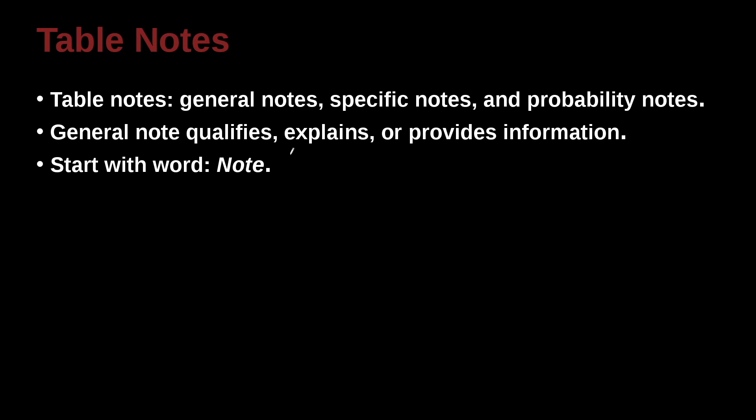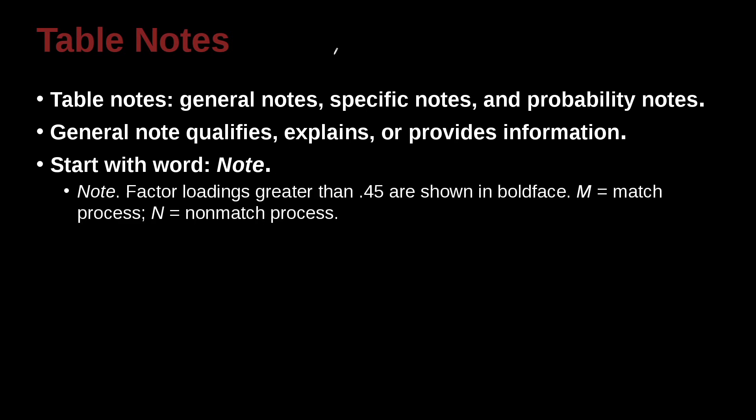So here's an example. You can see 'note,' it's italicized, and there's a period in one space here. Factor loadings greater than 0.45 are shown in boldface. M, which equals match process, and N equals non-match process. So that's telling us inside the table I have two abbreviations, M and N, and they mean these things. Here I have a period with a space, and then I begin this section, and I use a semicolon, which is okay because it's like two separate parts, but we put them together and put a period at the end.